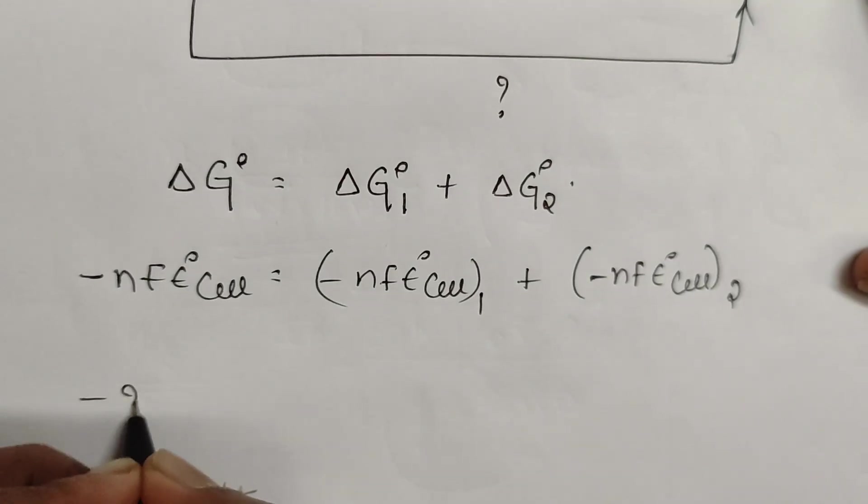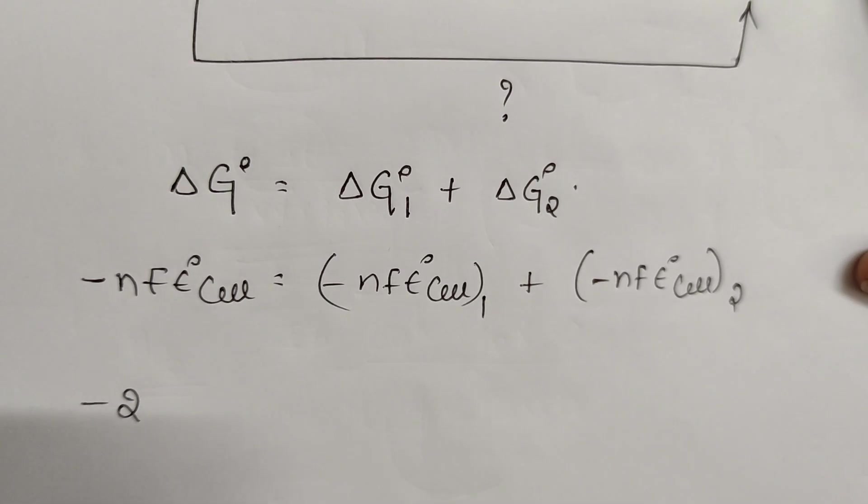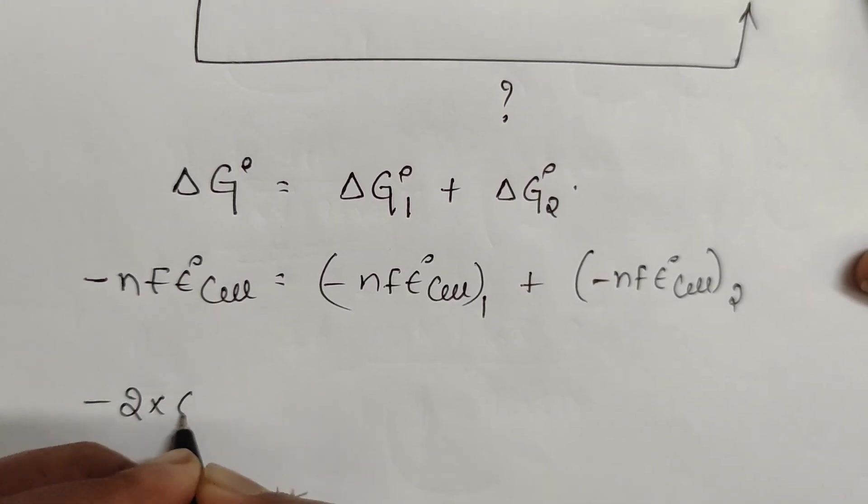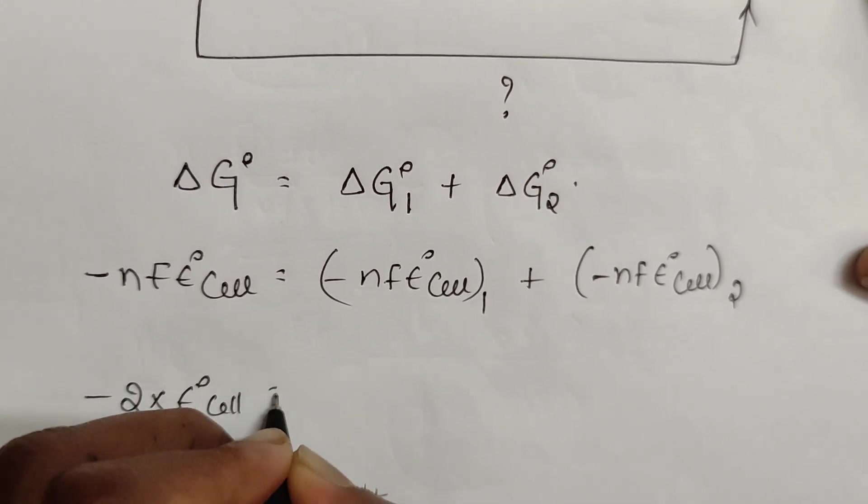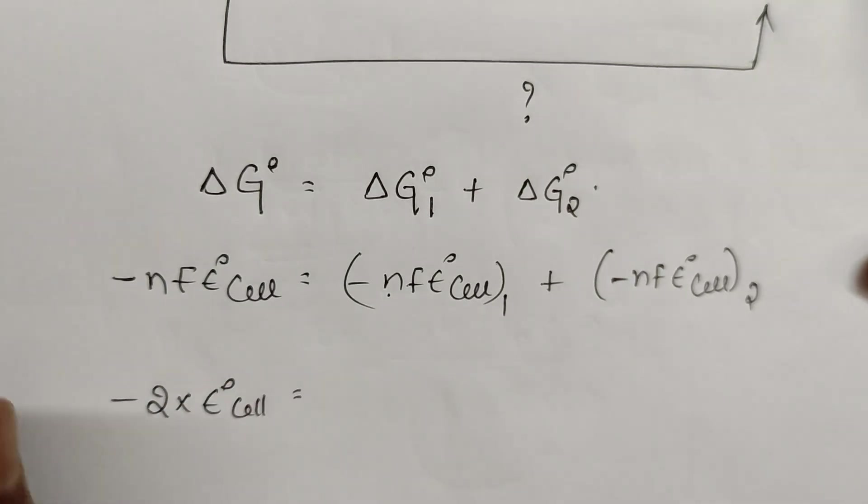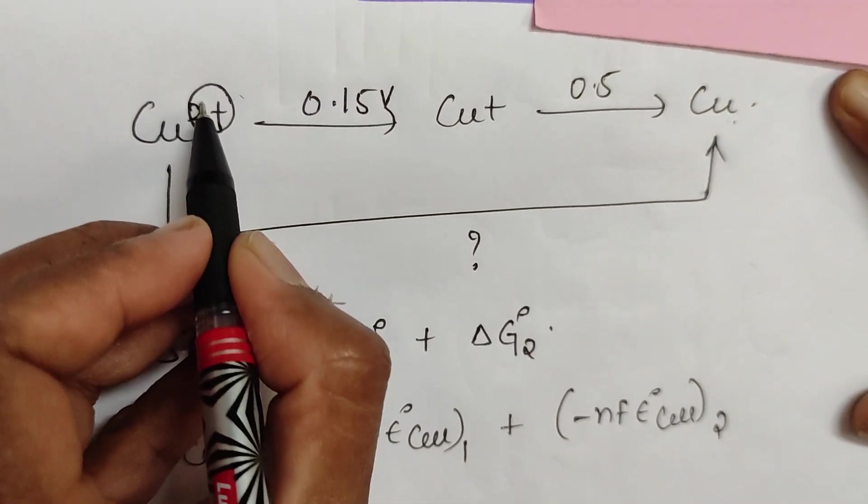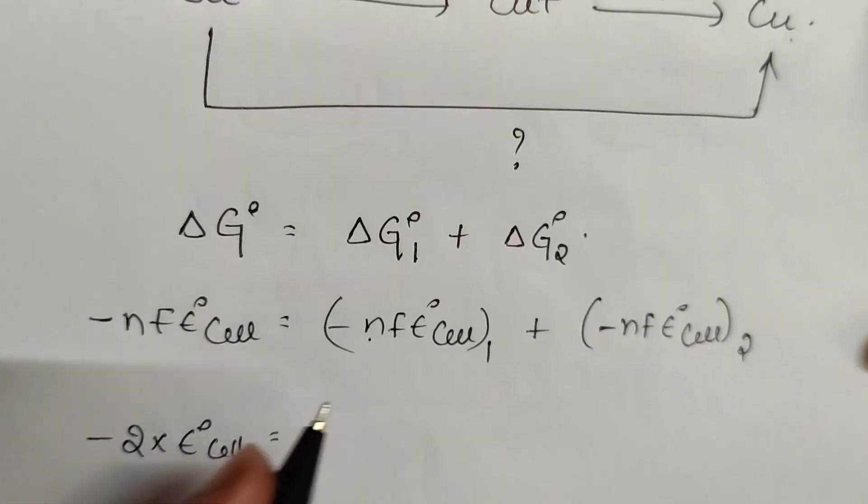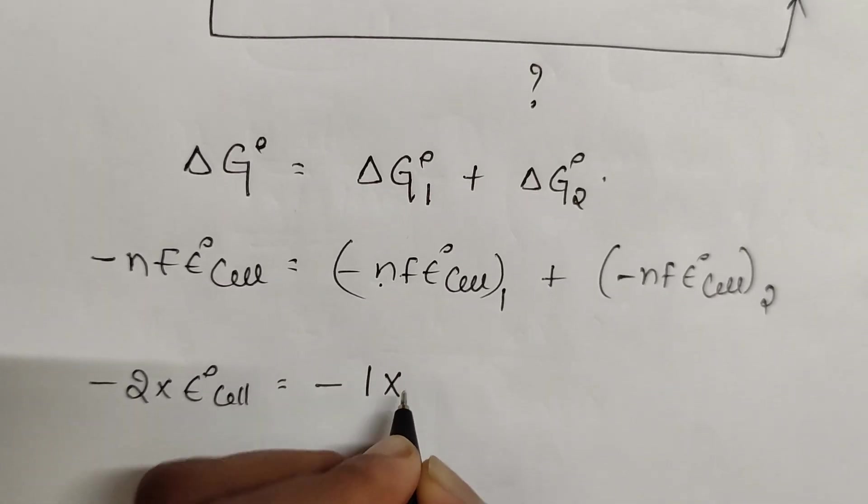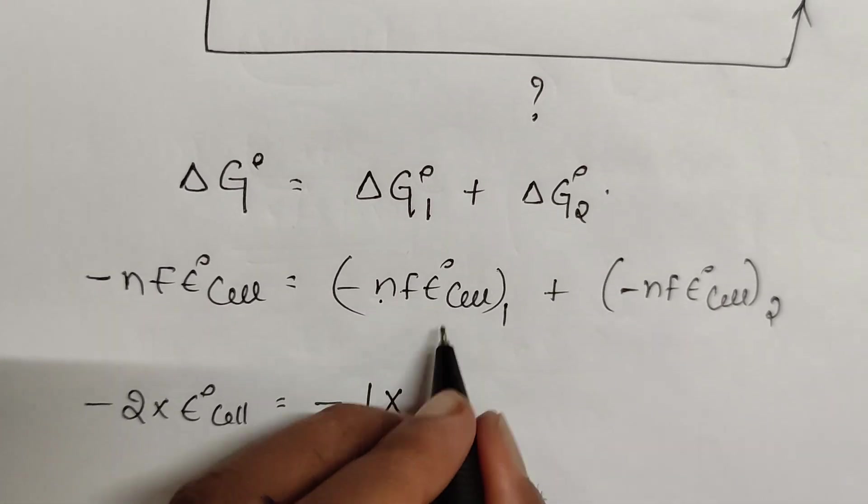The number of electrons change is 2. Faraday cancels on both sides, you can skip that. E°cell you need to find out. Here n value is the number of electrons change from plus 2 to plus 1, which is 1 into Faraday.